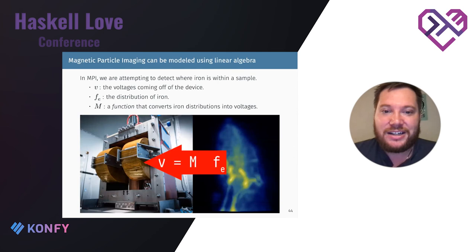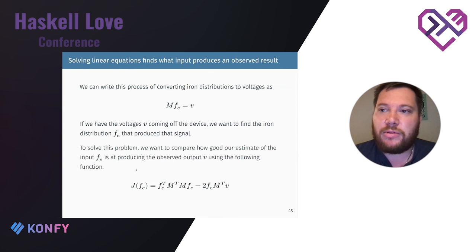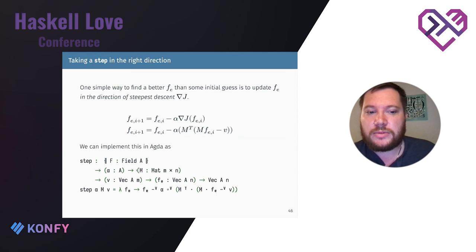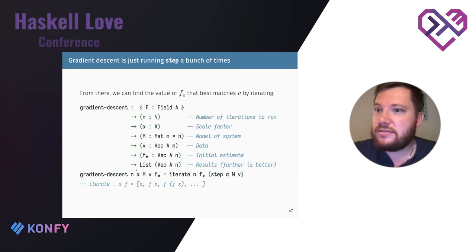Given the voltages, we reconstruct the original iron distribution using gradient descent — a guess-and-check process where you iteratively estimate the particle distribution, reproduce the voltages, and tweak your guess based on gradients of the slope, similar to Newton-Raphson. You keep iterating this process repeatedly to converge on the answer.